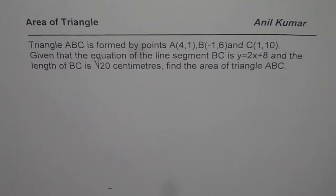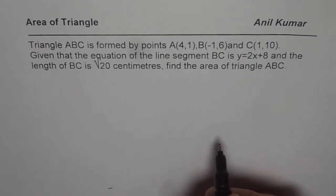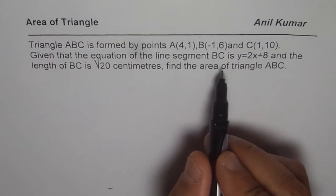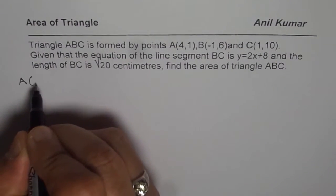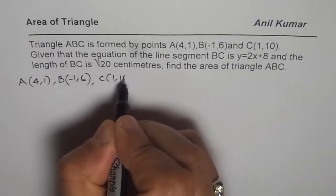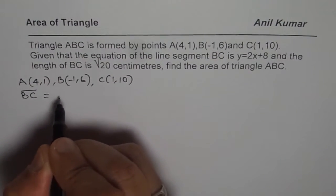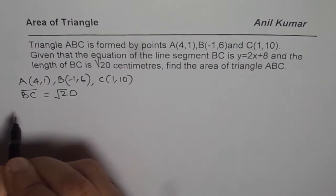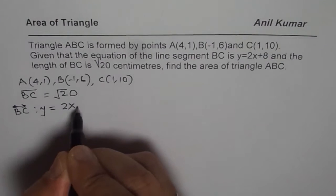Now Robert, let me first say thanks to your teacher. This question is relatively simpler than what it could have been, since you are already given the equation of the line BC and also the length of segment BC. So we are given three points: A(4,1), B(-1,6) and C(1,10). We are also given that the length of BC is √20 and the equation of line BC is y = 2x + 8.